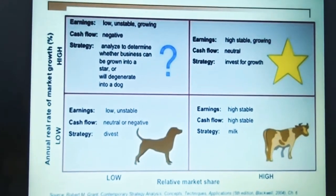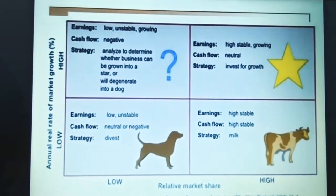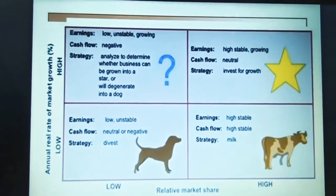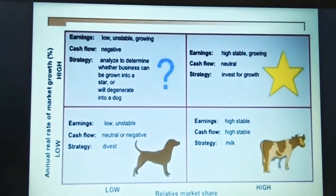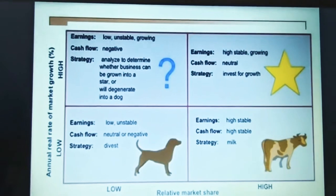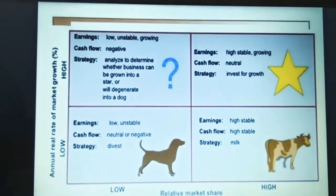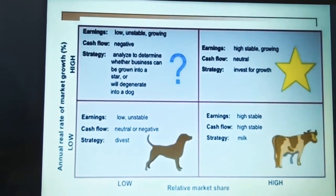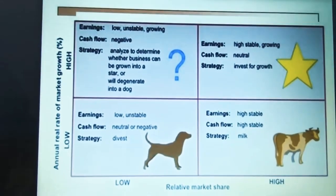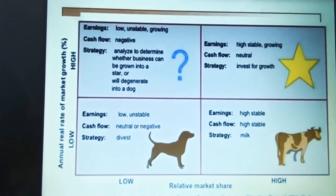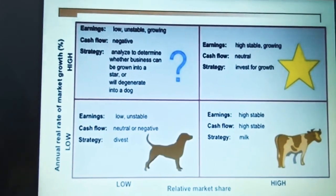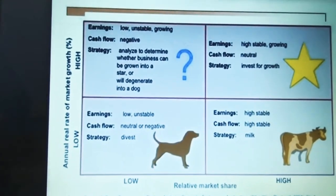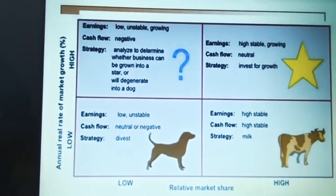The question mark category means demand is there, but market share is not so good compared to other products. At that time you should not take too much risk, because in the future it might be possible that your product demand becomes high. There are higher chances the demand will grow in future.